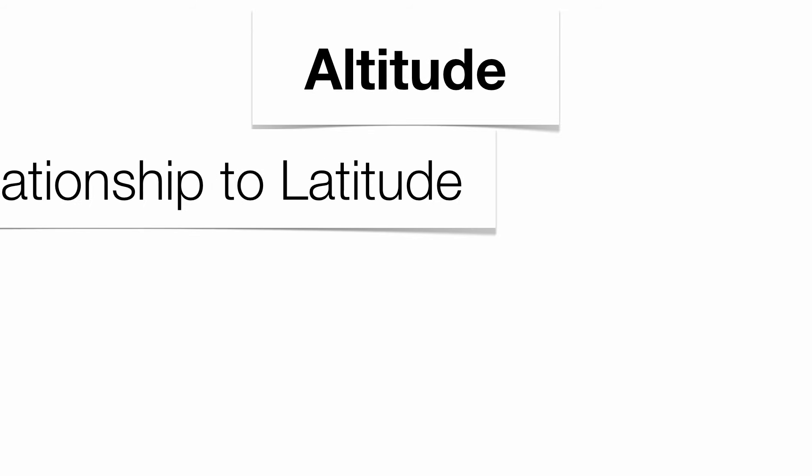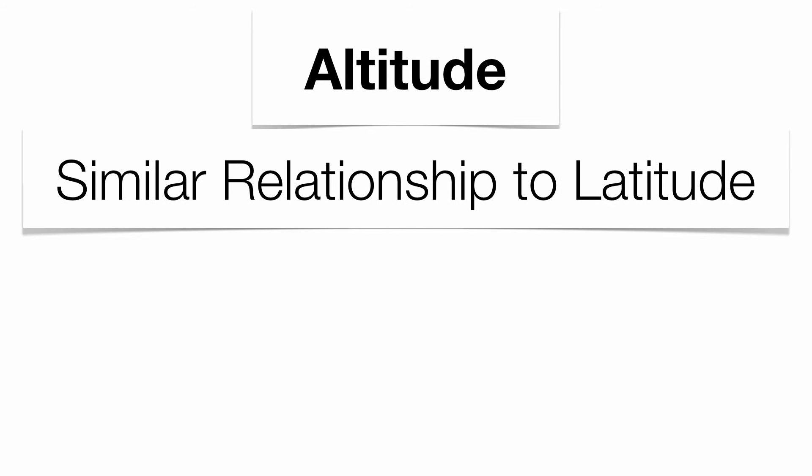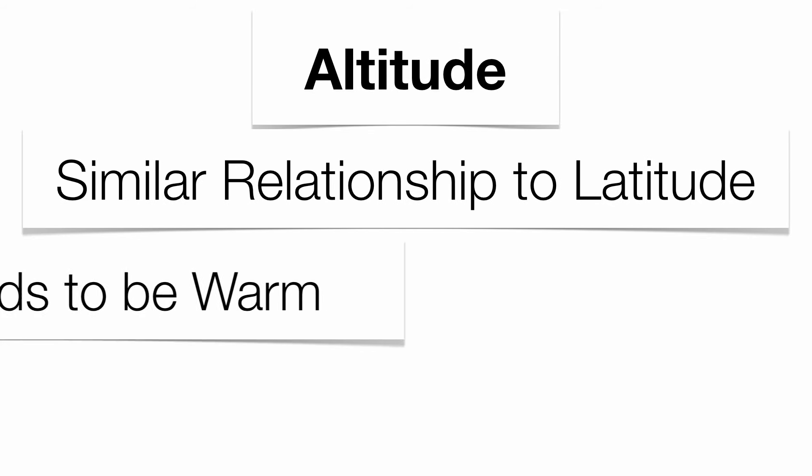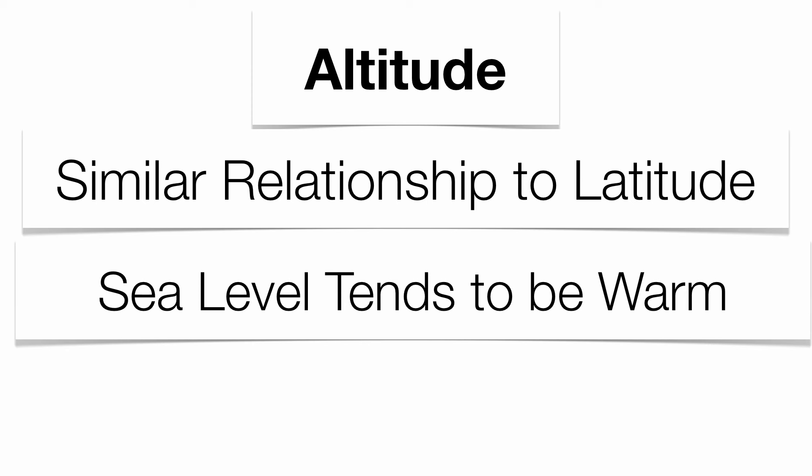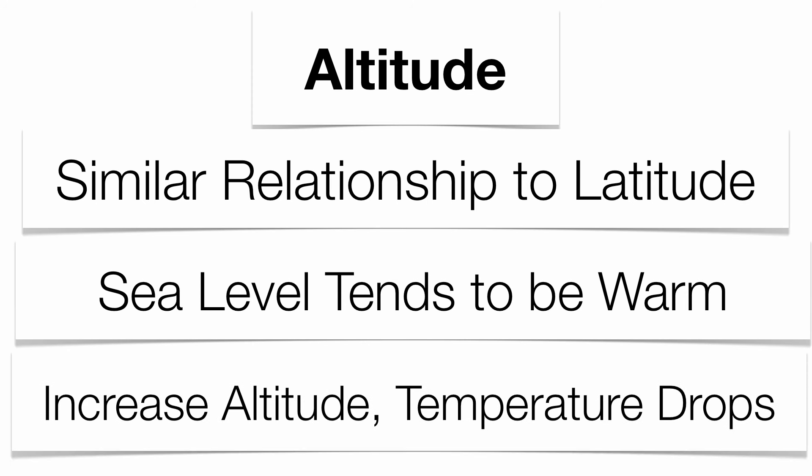The next factor is going to be altitude. Altitude and latitude have a very similar relationship. At sea level it tends to be warm, but as you increase your altitude, your temperature is going to drop. Some mountain ranges, even in the summertime, have snow-capped peaks because the temperature is just so cold — a very similar relationship to latitude.